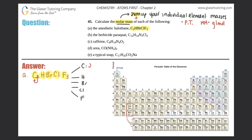How many carbons do we have? There's a subscript 2, so there are two carbons. Hydrogen has a hidden one, so that's one hydrogen. Bromine has one, chlorine has one, and then fluorine has a subscript 3, so there are three fluorines.